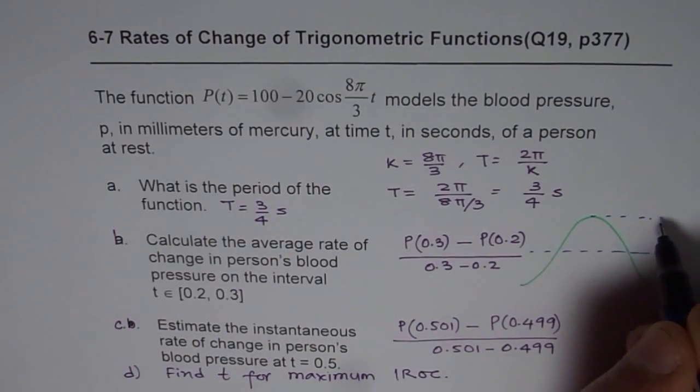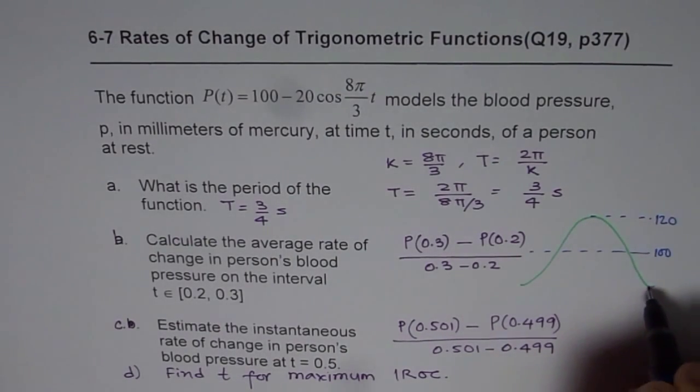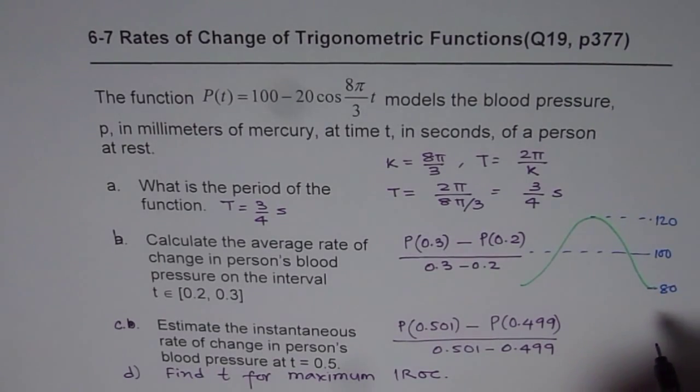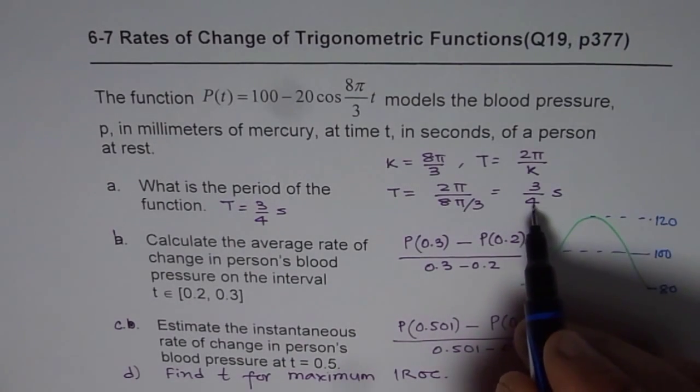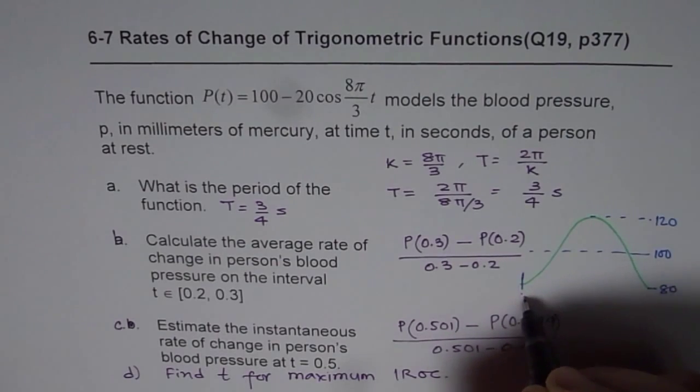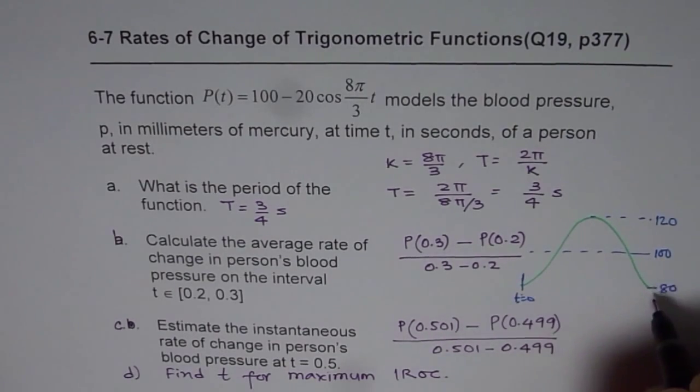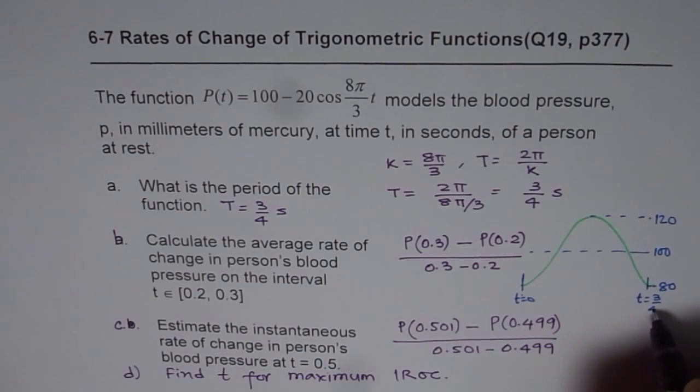Maximum will be 20 more and the minimum will be 20 less, which would be 80 for us. So time period is as we calculate 3/4 of a second. So let us say this is somewhere here, T equals 0. Then this will be T equals 3/4 of a second.